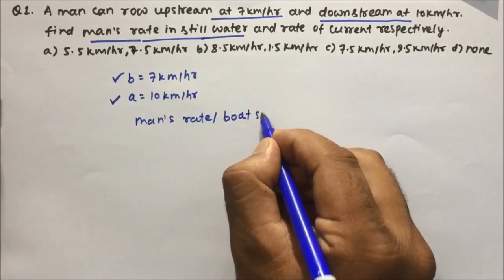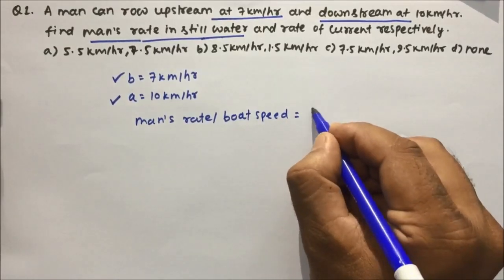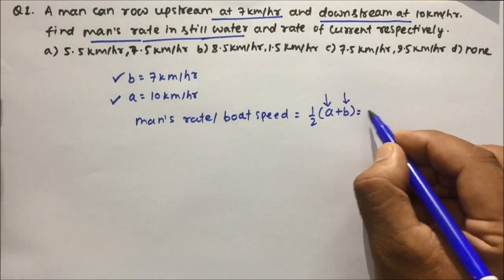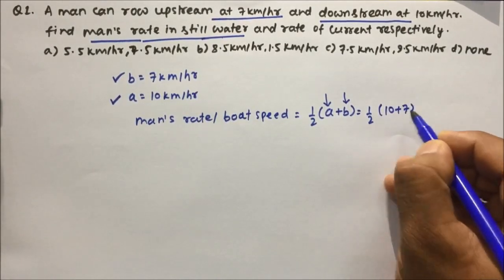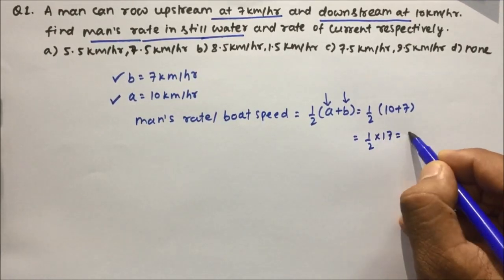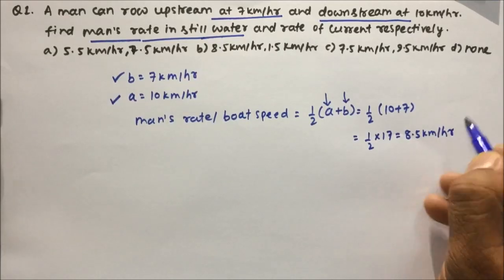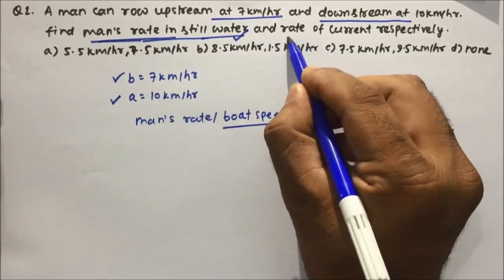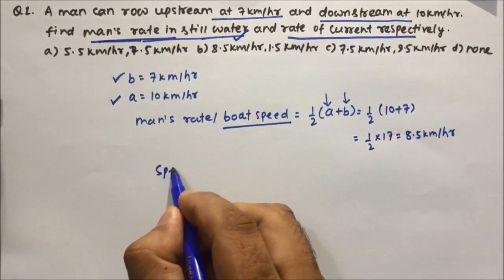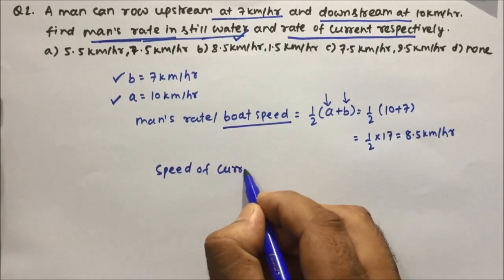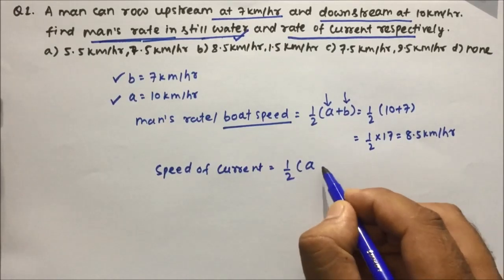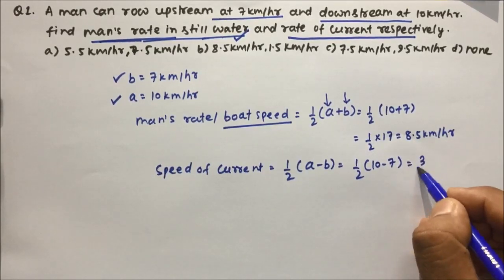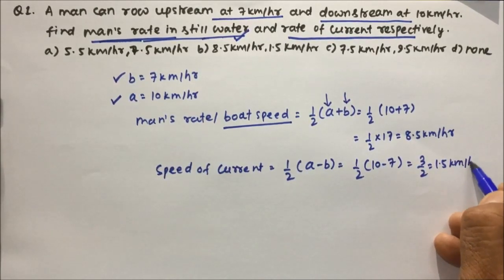The speed of the boat and the speed of the man are the same, which equals 1/2 into (A + B) when upstream and downstream speeds are given. So 1/2 into (10 + 7) = 1/2 into 17 = 8.5 km per hour. Then the rate of current: speed of current = 1/2 into (A − B) = 1/2 into (10 − 7) = 3/2 = 1.5 km per hour.